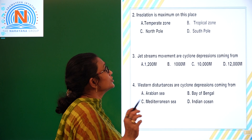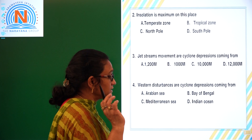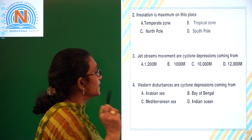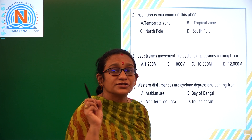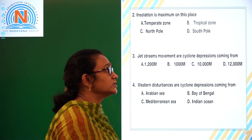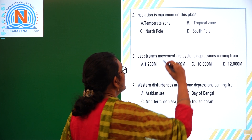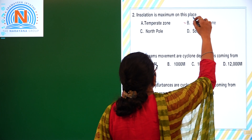Next: insolation is maximum on which place? Insolation is maximum in the tropical zone.